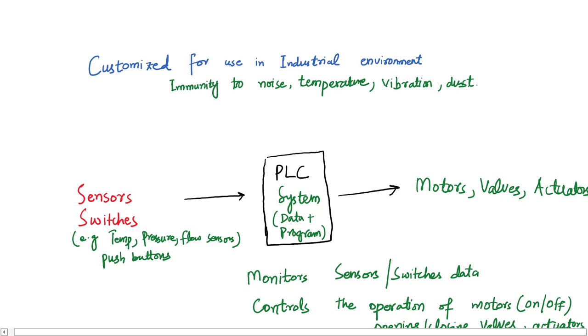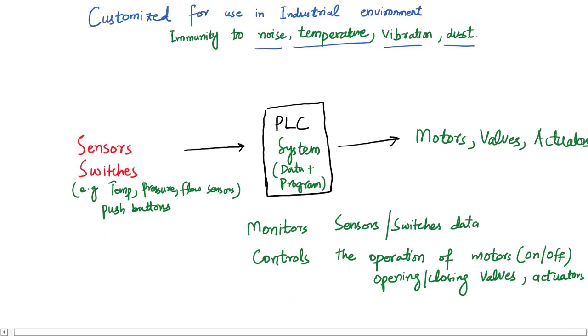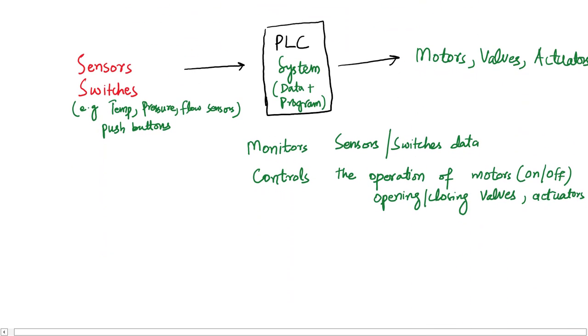These include noise, temperature, vibration, and dust. Let me redraw the working of a PLC system: the sensors send the digital and analog data to the PLC system, while the PLC then sends digital and analog data to motors, valves, and actuators because these devices have to be controlled by the PLC.